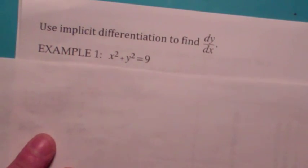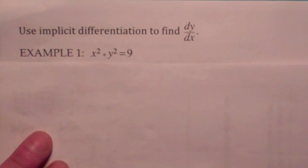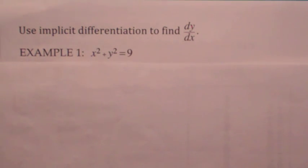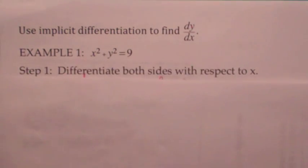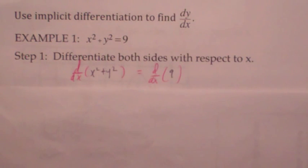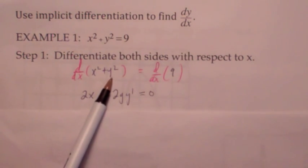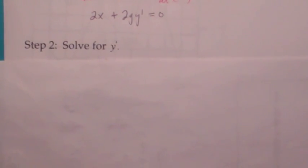Now we're ready. For implicit differentiation to work, we assume that y can be written as a differentiable function of x if we look at a piece of the graph. The process is always the same: differentiate both sides with respect to x — do not solve for y. On the left side of x² + y² = 9 you get 2x·(1) + 2y·y-prime. On the right side you get 0. The second step is to solve for y-prime: subtract 2x and divide by 2y, giving y-prime = −x/y. That's the slope of the tangent line to the circle x² + y² = 9.